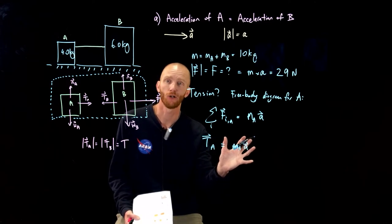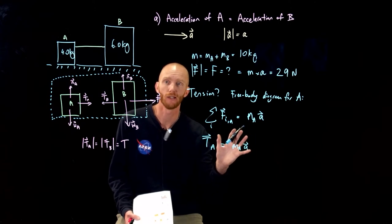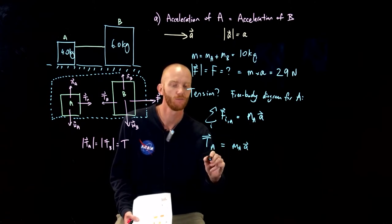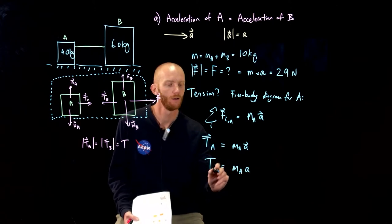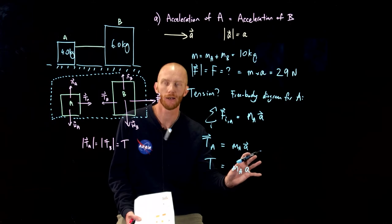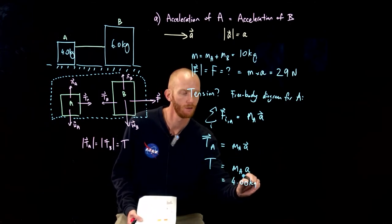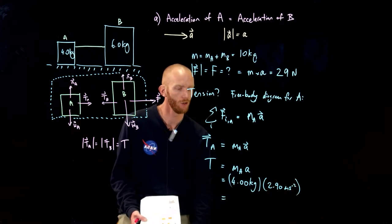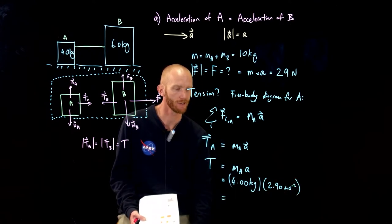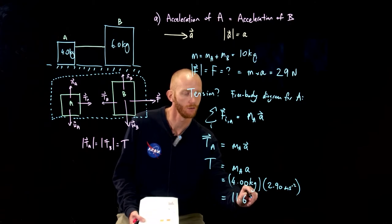We can just take the x component of this equation because it's a purely x-oriented set of vectors. And that means that T is equal to MA times A. We know everything about the right hand side. It's 4 kilograms times 2.9 meters per second squared so that is 8 plus 3.6 is 11.6 newtons.